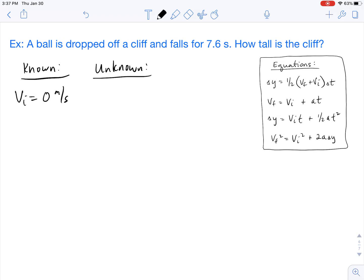The problem tells us that the ball falls for 7.6 seconds, so that's going to be our time. And in these free-fall problems, we know that the acceleration is due to gravity, so gravity's acceleration is negative 9.8 meters per second squared.